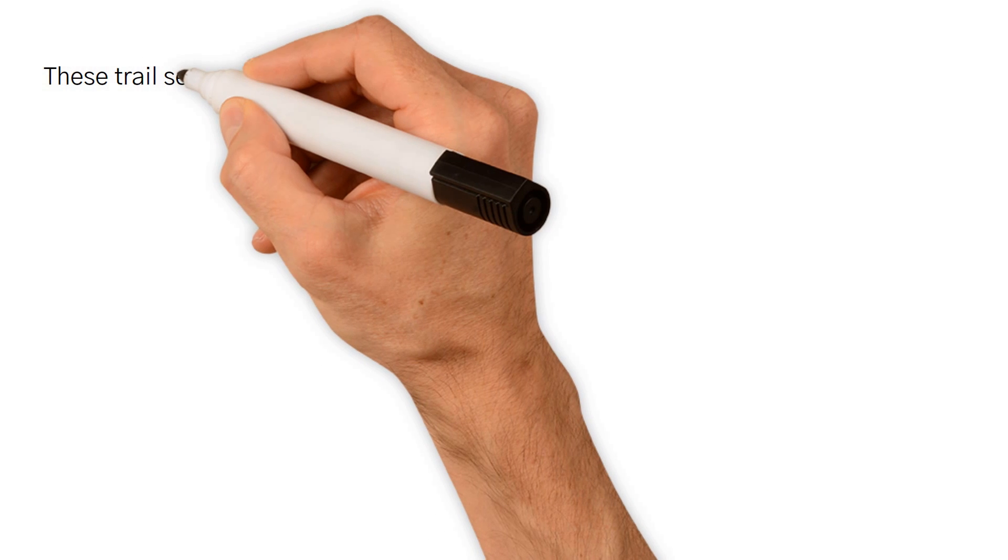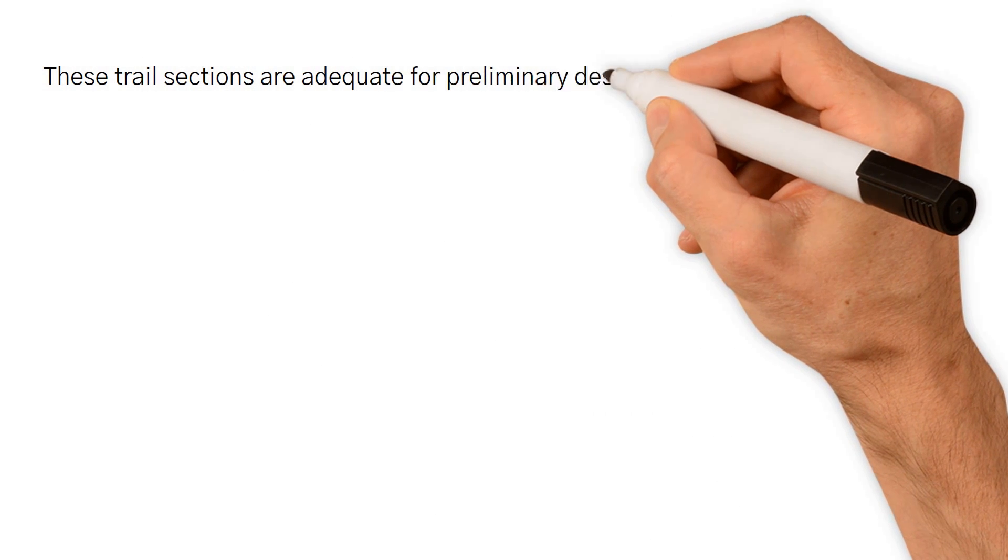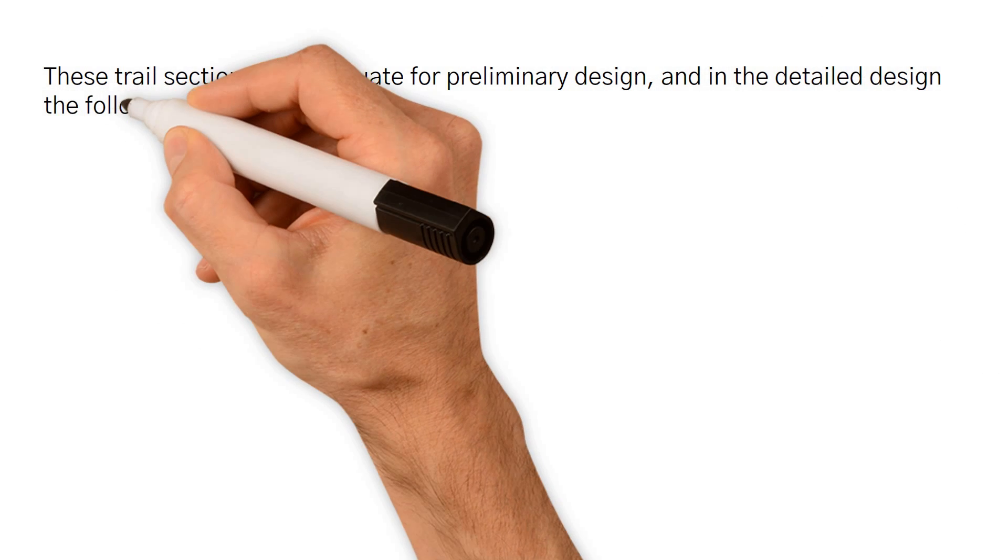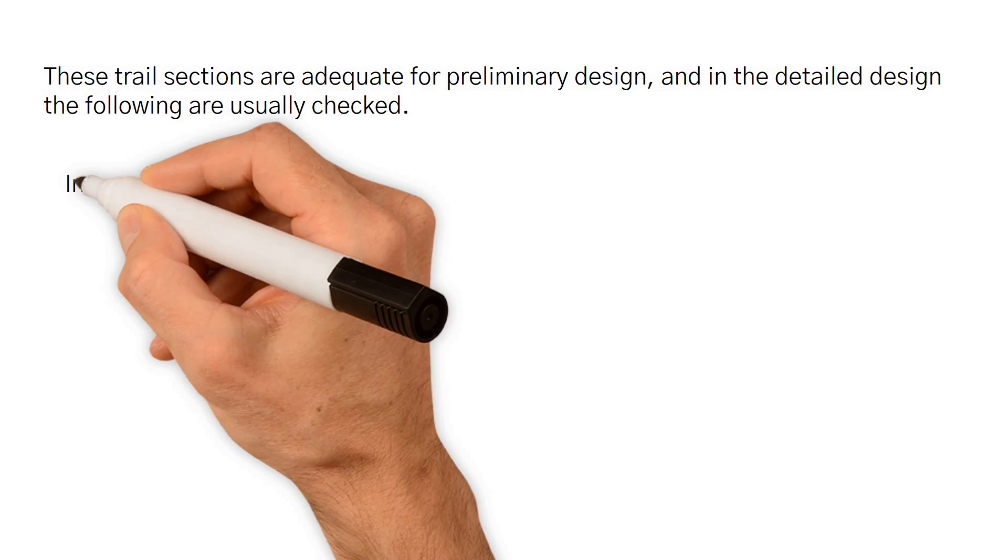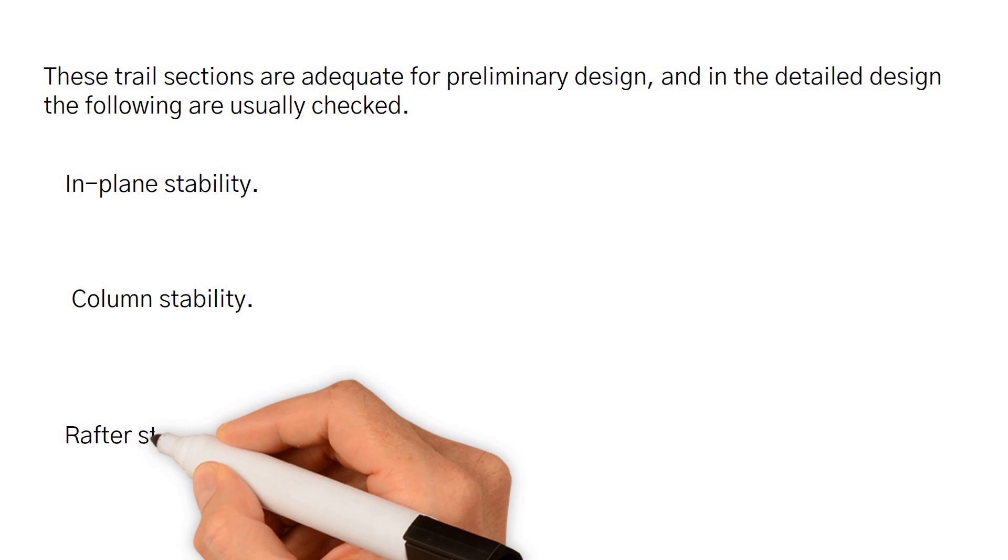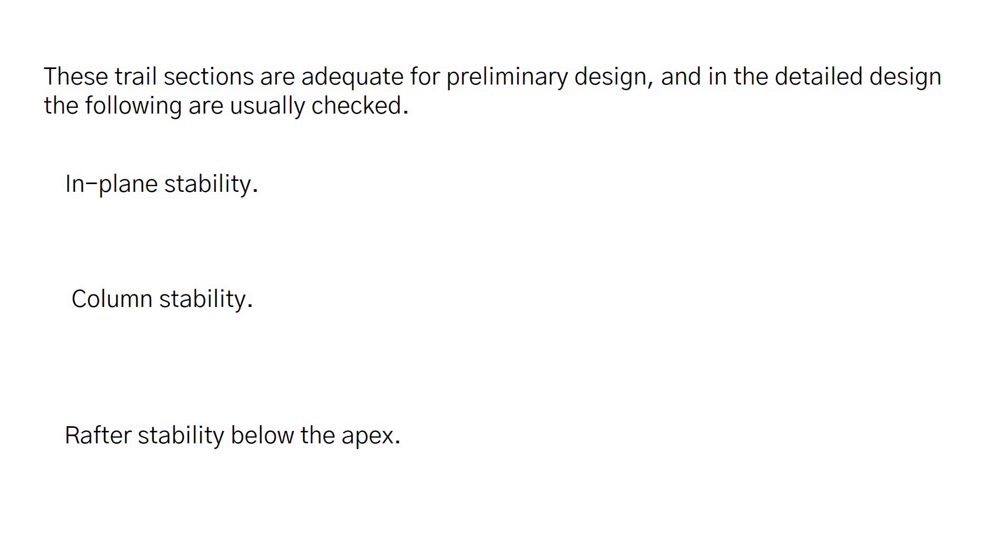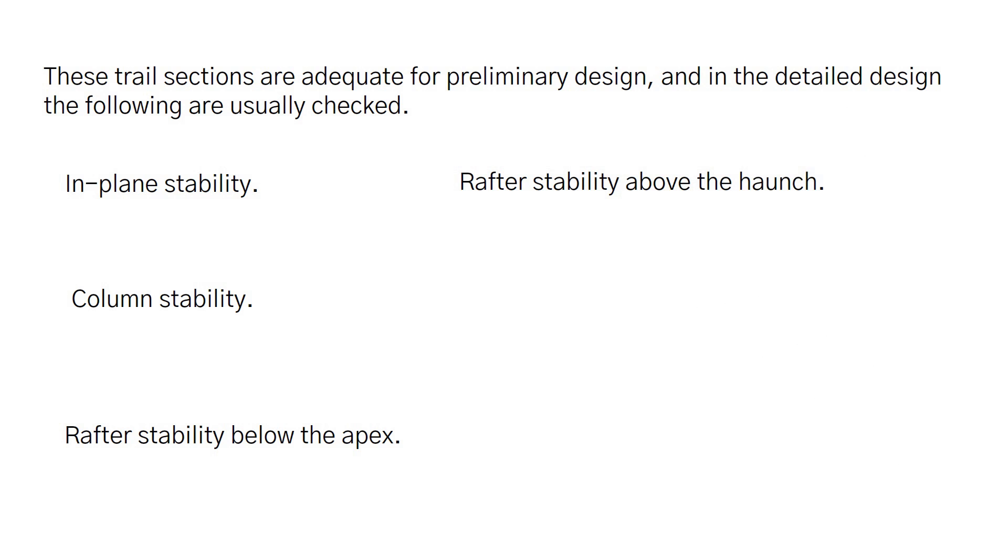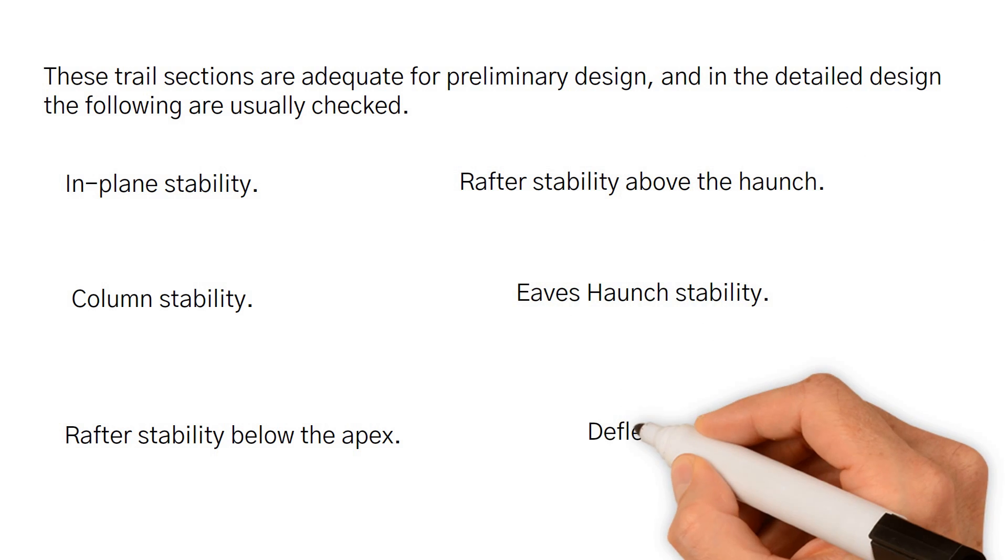These trail sections are adequate for preliminary design, and in the detailed design the following are usually checked: in plane stability, column stability, rafter stability below the apex, rafter stability above the haunch, eaves haunch stability, and deflection.